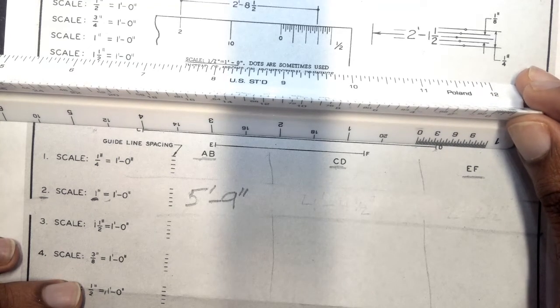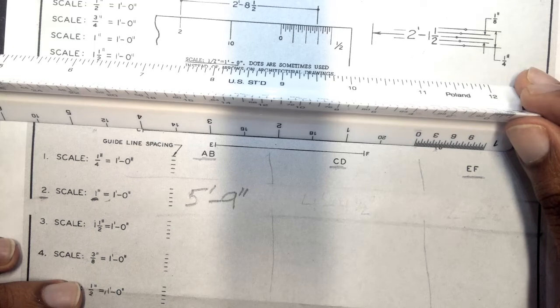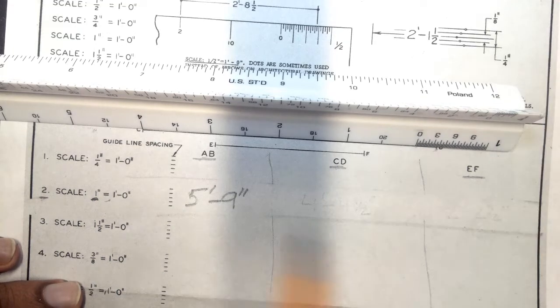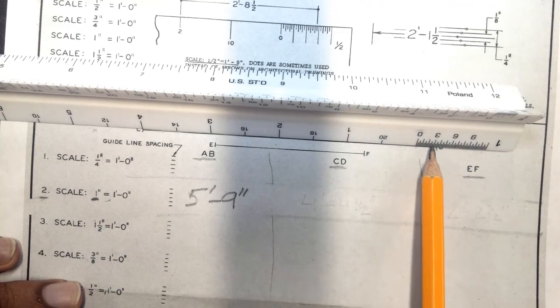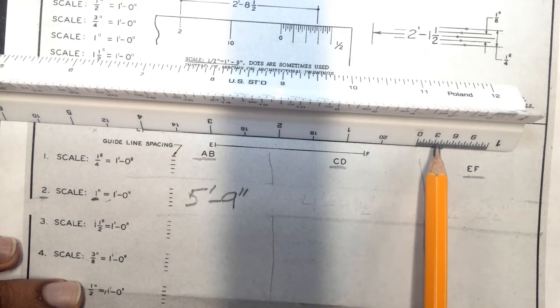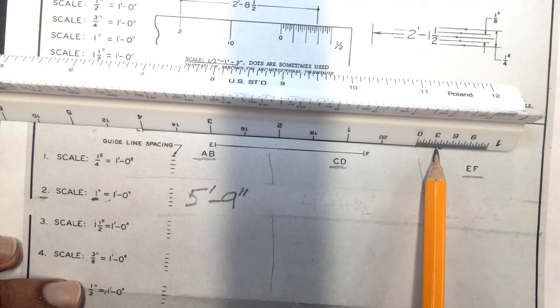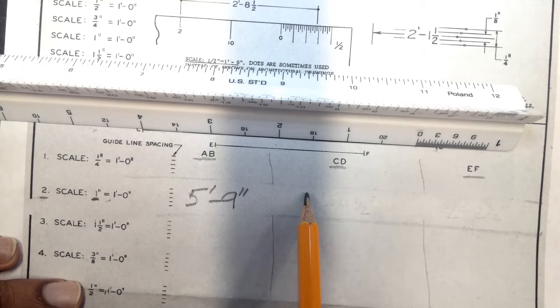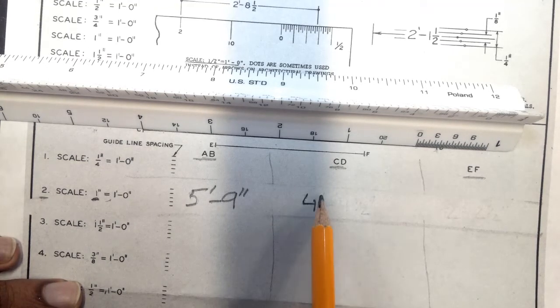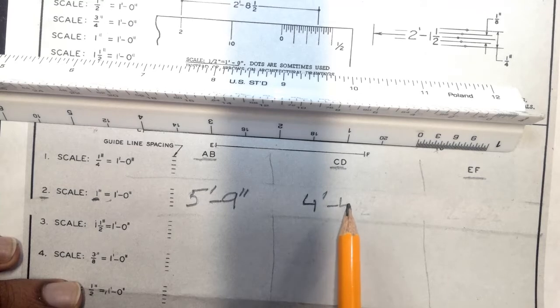So I have 4 feet, some left. So 4 feet, 3, immediately jumping to 3, 4 and a half inches. So 4 feet, 4 and a half inches.